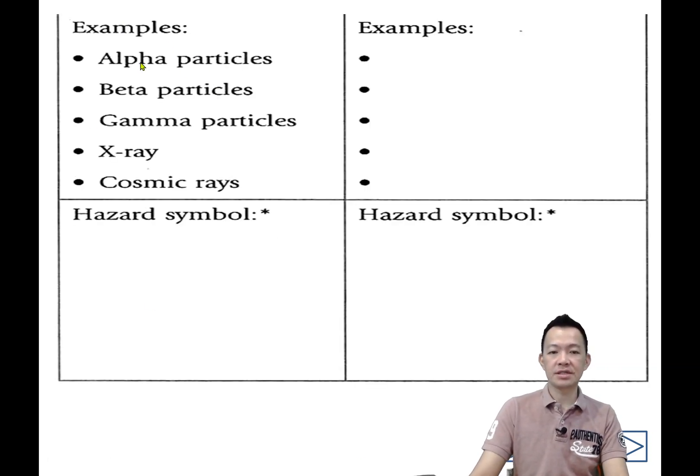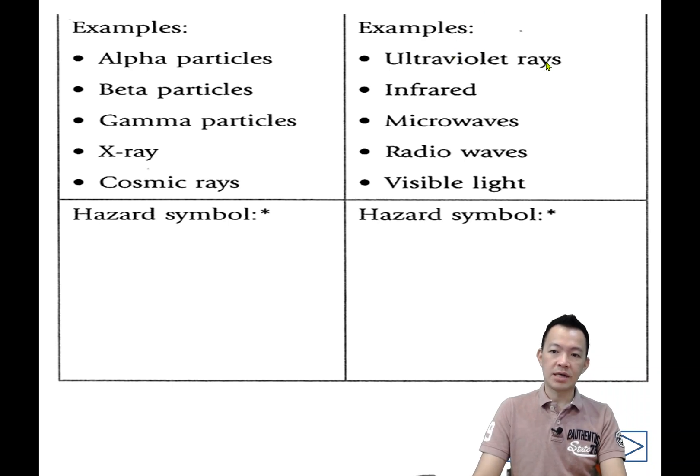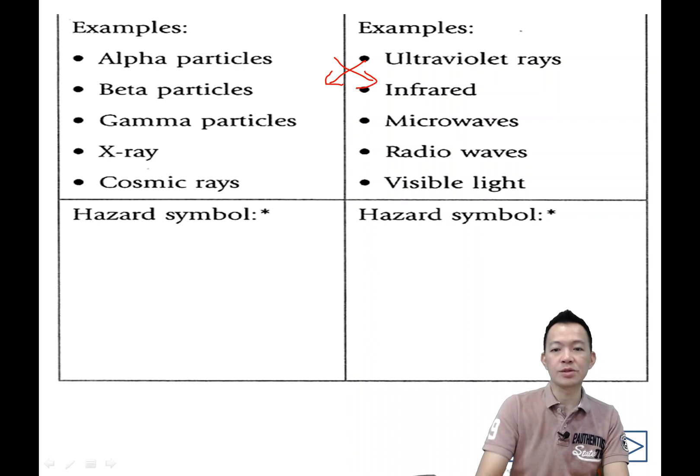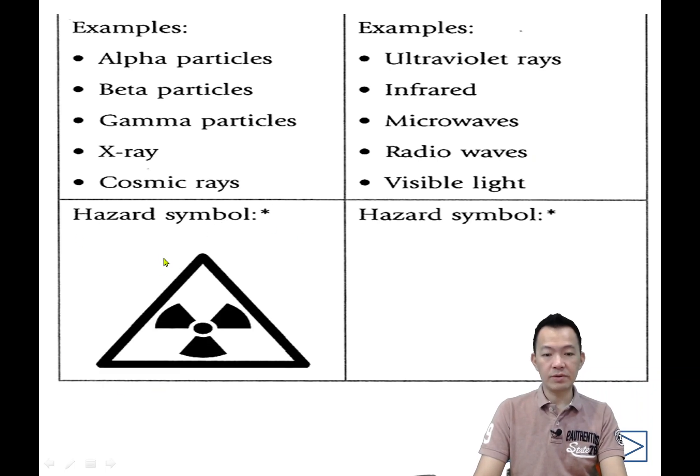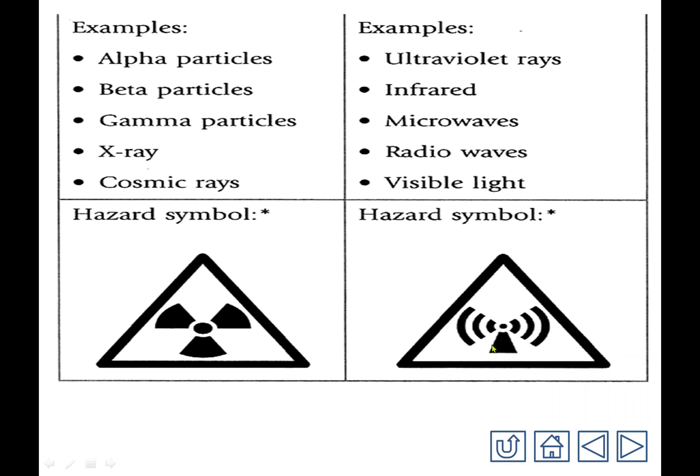Any example of ionizing radiation? Alpha, beta, gamma, X-ray, cosmic ray from outer space. Non-ionizing radiation examples: ultraviolet is in the middle gray area, infrared, microwave, radio wave, visible light. These have no ionizing power. The symbol for ionizing radiation can be found in hospitals, in X-ray rooms. Non-ionizing radiation is safe, and this symbol looks like the WiFi symbol, found everywhere in your phone, house, coffee shops.